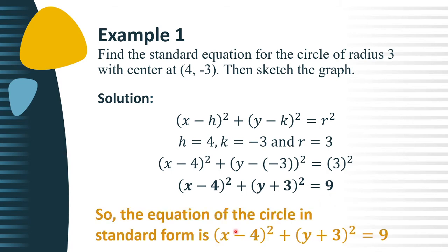So, the equation of the circle in standard form is (x - 4)² + (y + 3)² = 9.